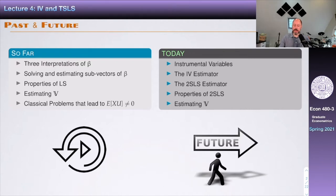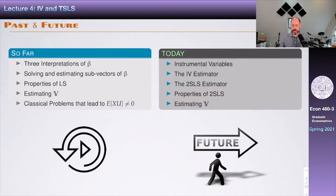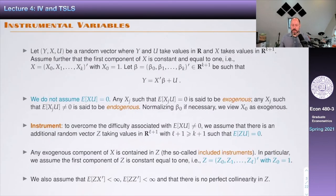And once we're there, we're going to talk about the properties. I'm going to show that under some conditions, this estimator is going to be asymptotically normal with some asymptotic variance, and we're going to discuss how to estimate it. So, that's about it. Let's get started.